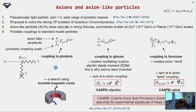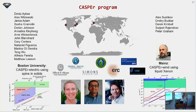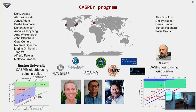On this slide I just talked about searching for coupling to photons. For the rest of my talk I'm going to focus on CASPER, which is searching for coupling to gluons and coupling to fermions. The CASPER collaboration spans a bunch of institutions - the people doing the work, and those doing the talking. We're collaborating with Dima Budker's group at Mainz. CASPER Electric is running in my group here at Boston University using spins in solids, and CASPER Wind uses liquid xenon and is running in Mainz.